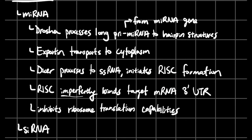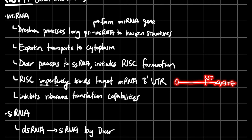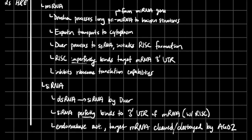When RISC formation happens, for miRNAs, RISC imperfectly binds to the target mRNA's 3' untranslated region. Remember, mRNAs have a 5' cap and a poly-A tail, and in between you have the termination sequence and then the 3' UTR, which helps the ribosome know where to stop translating to make an actual protein. RISC imperfectly binding to that region inhibits ribosome translation — the ribosome doesn't know where to stop, resulting in an imperfect protein, which gets broken down by proteasomes.